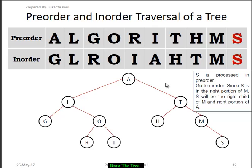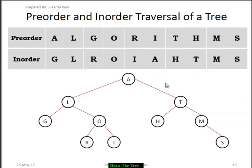After visiting all of the nodes in pre-order and in-order sequence, we see that the tree looks like this: A is the root node, the two children of A are L and T, L has two children G and O, O has two children R and I, T has two children H and M, and M has only one child which is S. This is how we draw a tree when pre-order and in-order sequences are given.